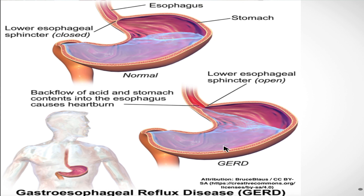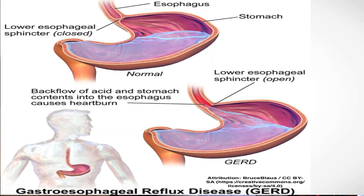What actually happens in gastroesophageal reflux disease, as you can see in the second picture, is that the acid present in the stomach is moving into the esophagus. There is a change in the color of the esophagus at the lower esophageal sphincter because the backflow of acid and stomach contents into the esophagus causes heartburn and mucosal damage in the esophagus, giving rise to what is called esophagitis. Why does this actually happen? What is the reason for gastroesophageal reflux disease?